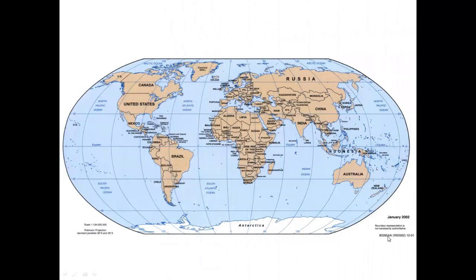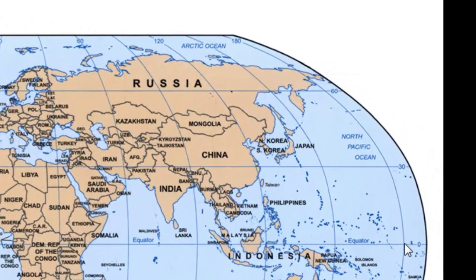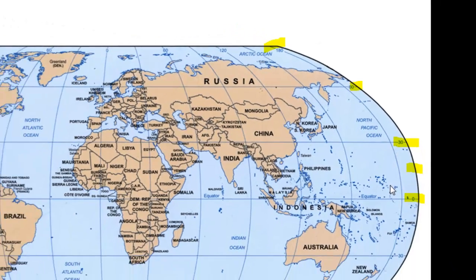Now let's practice using latitude and longitude to find absolute location. On a larger map, such as this world map, you do not have a line for every degree. When we look at our latitude lines, we have the equator at zero degrees, and then 30, 60, and 90 degrees north and south of the equator. Therefore, if we had a coordinate of 15 degrees north, we would have to estimate its location somewhere between 0 and 30 degrees. This would make it difficult to find the actual absolute location. When finding a location in the United States, it's best to use a map focused just on the United States, and not a large world map like this one.